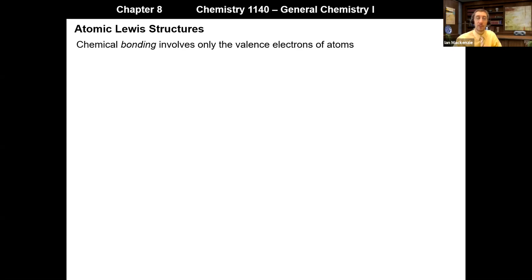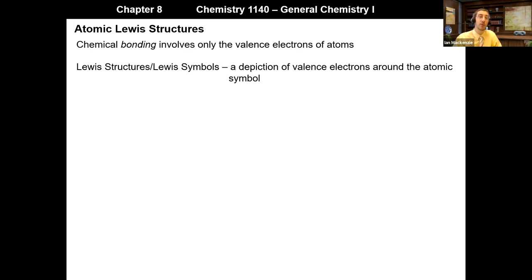What's a good description of a chemical bond? The one tool we use to help us picture this is Lewis structures, also known as Lewis symbols when talking specifically about atoms. A Lewis structure or Lewis symbol is a depiction of the valence electrons around the atomic symbol. For example, if you take nitrogen and arrange the valence electrons around the four faces of the atomic symbol, nitrogen has five valence electrons, so we see five dots around nitrogen.